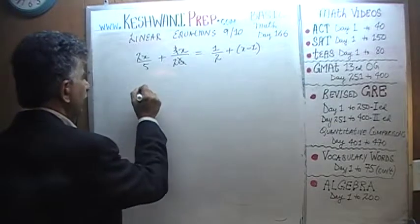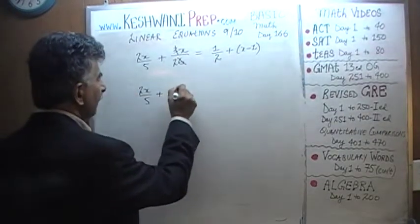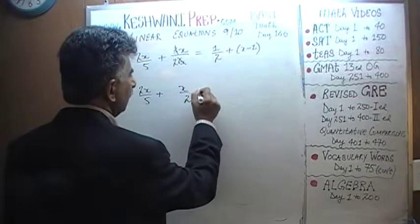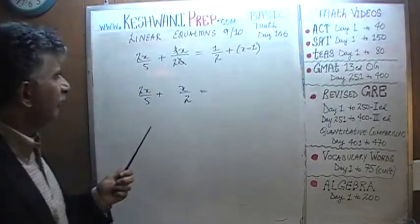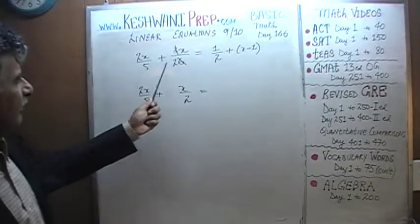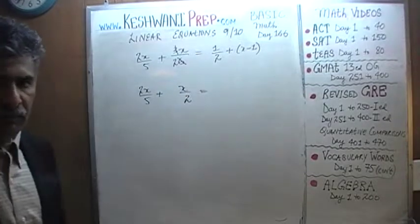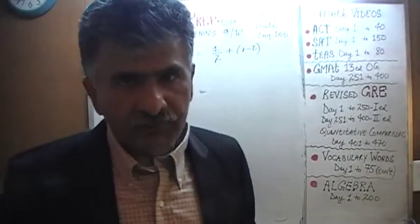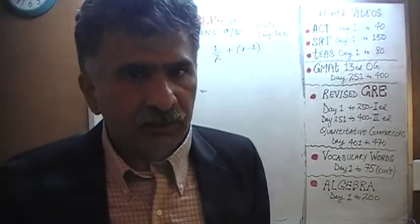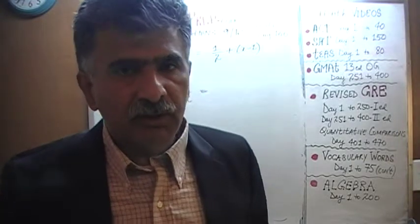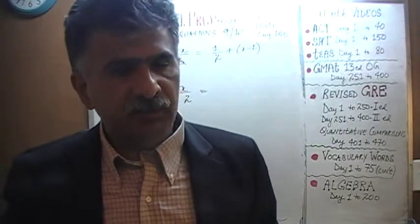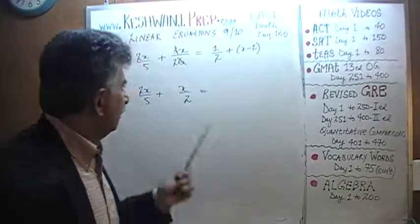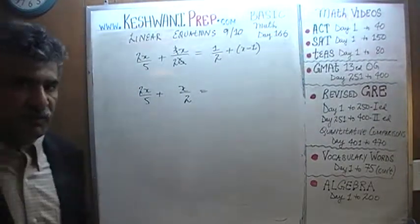So what we end up here is 2x over 5 plus x over 2 and then we have the rest of this stuff. Next thing we notice is that we have a 5 here, we have a 2 here, we have a 2 here. We have to get rid of these denominators. The easiest, the quickest, the simplest way is to look for the smallest possible number that is a multiple of both 5 and 2. The smallest possible number, the least common multiplier here is 10.